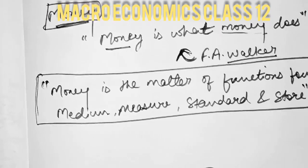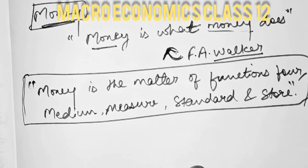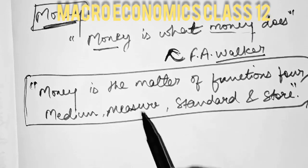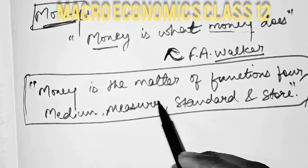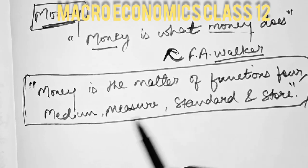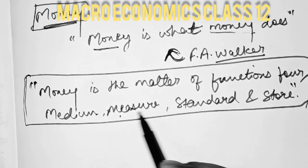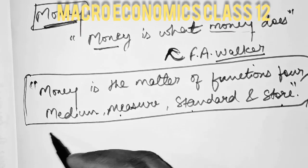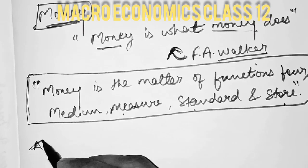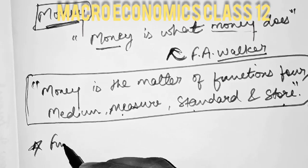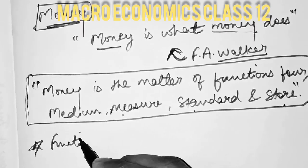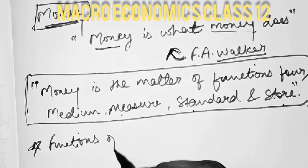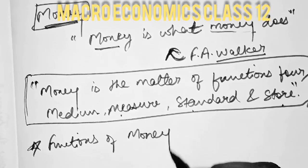This is the most important definition: money is a matter of functions for medium, measure, standard, and store. These are 4 things, and we can say these 4 are also known as the functions of money.